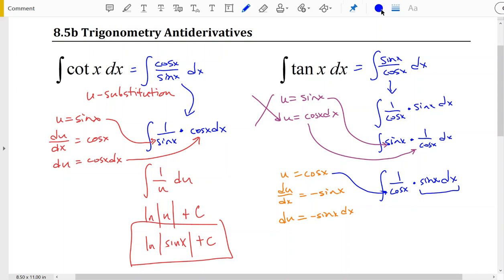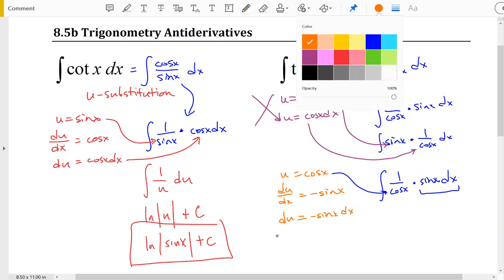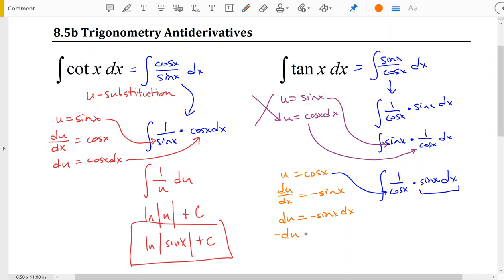But our du is equal to negative sine x dx. So maybe let's just go ahead and rewrite it in a better form here. Negative du equals sine x dx, multiplying both sides of this equation by negative 1. And now we can substitute that in.